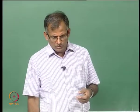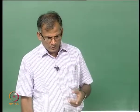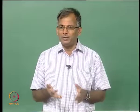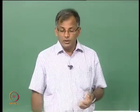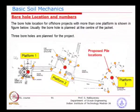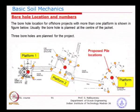I just wanted to show you, in a typical case, how the boreholes are located for an offshore platform. You can see here we have three platforms for this particular field. Each platform is different in nature — number of piles, orientation, location. Platform 1 has only four piles located approximately 30 meters by 30 meters spacing.